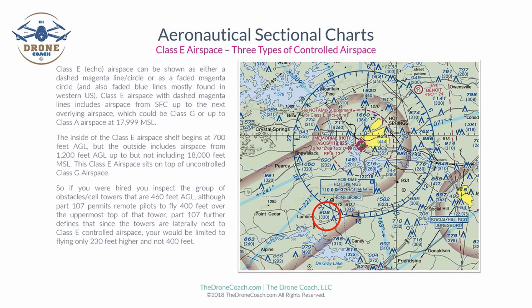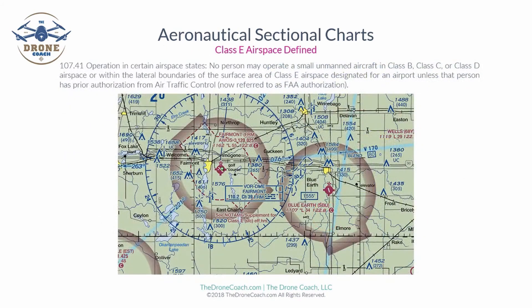Now let's get into Class E airspace in a bit more detail, because it is perhaps one of the trickiest airspaces to review. Part 107.41 states that no person may operate a small unmanned aircraft in Class B, C, or D airspace, or within the lateral boundaries of the surface area of Class E airspace designated for an airport, unless that person has prior authorization from ATC. Whenever the FAA refers to ATC or air traffic control in their publications, it is always referring to FAA authorization — that is what they really mean.